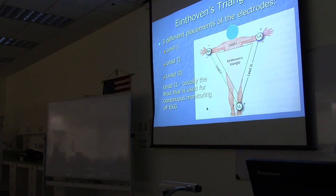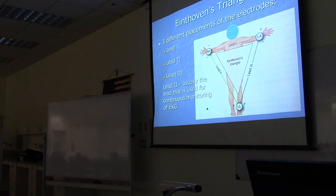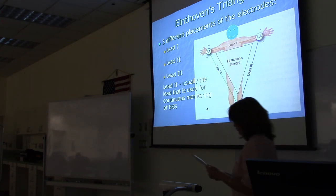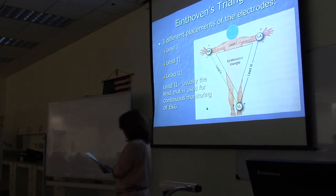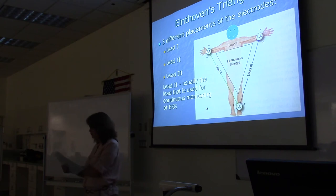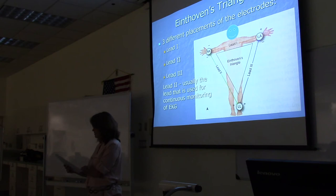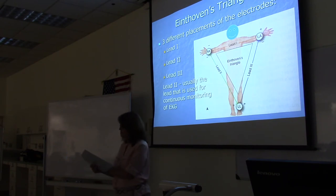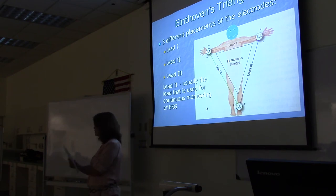Einthoven's triangle refers to how placing charges differently on the electrodes changes the way the tracing looks, allowing you to visualize the left ventricle from different angles. The electrodes are not moved for different leads; instead, the settings on the EKG machine or monitor change the polarity.